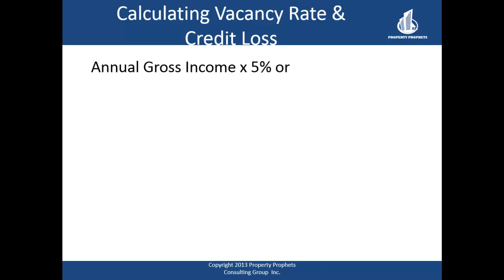For this example I'm using a 3% vacancy rate, which we subtract from our gross rental income as a necessary expense — this amount should be taken monthly and left in a separate account. I also add 2% credit loss, which accounts for expected losses from bad debts. So we allot 5% total of the annual gross income: $30,000 times 5% equals $1,500.